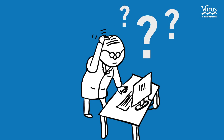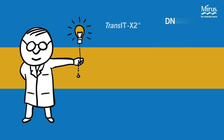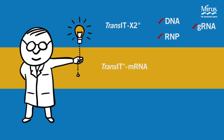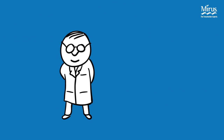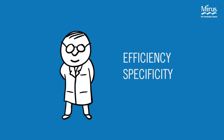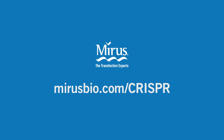To simplify your experiments, Mirus Bio offers three solutions that address all of your transfection needs for genome editing: Transit X2 for delivery of plasmid DNA, guide RNA, or RNPs; Transit mRNA for delivery of messenger RNA and guide RNA; and Ingenio electroporation solution for delivery of CRISPR-Cas components in any format. With the power to deliver CRISPR-Cas components in any format, you can design genome editing experiments with high efficiency and specificity for a successful outcome. For more information on CRISPR transfection, please visit merisbio.com/CRISPR.